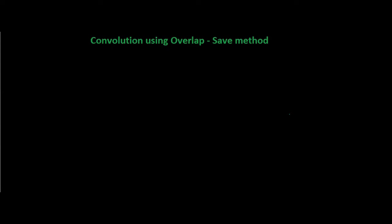Hello all, welcome to the new video. In this video we will see how to find convolution using the overlap save method. In this series I have dealt with how to find convolution using the overlap add method. Both overlap add and overlap save methods are memory efficient schemes. Whenever we have to find a convolution between two sequences, we prefer these methods because both use less memory and fewer calculations.